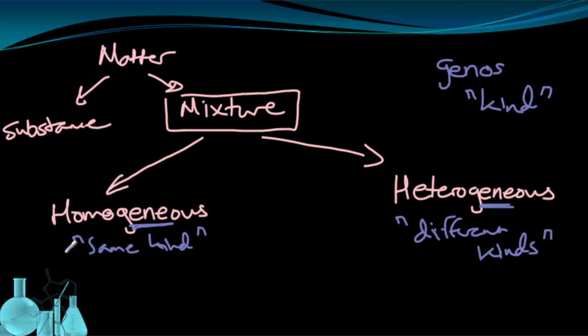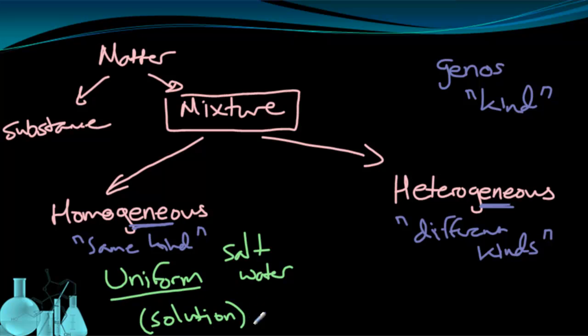When we talk about a homogeneous mixture, we're talking about a mixture that is uniform. Here's that idea of uniformity again. A homogeneous mixture is uniform. It's the same throughout. An example of this is when you combine salt and water in a mixture and you get salt water. Salt water is uniform all the way through. It's a mixture because it has two different substances in it, salt and water. But it has this uniformity. It's evenly distributed. So it's a homogeneous mixture. This is sometimes called a solution.